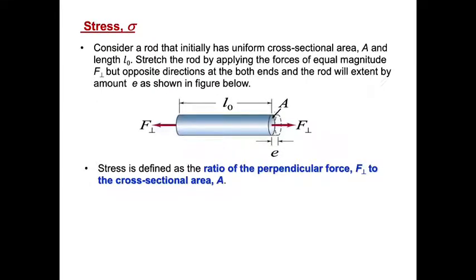Stress, or the Greek alphabet sigma (σ), is defined as the ratio of the perpendicular force to the cross-sectional area A. Imagine that we have a long rod, initially, with a uniform cross-sectional area A, and the original length L₀. When we stretch them from both sides with equal magnitude, but in opposite direction, the rod or the wire will extend by amount E, which means extension.